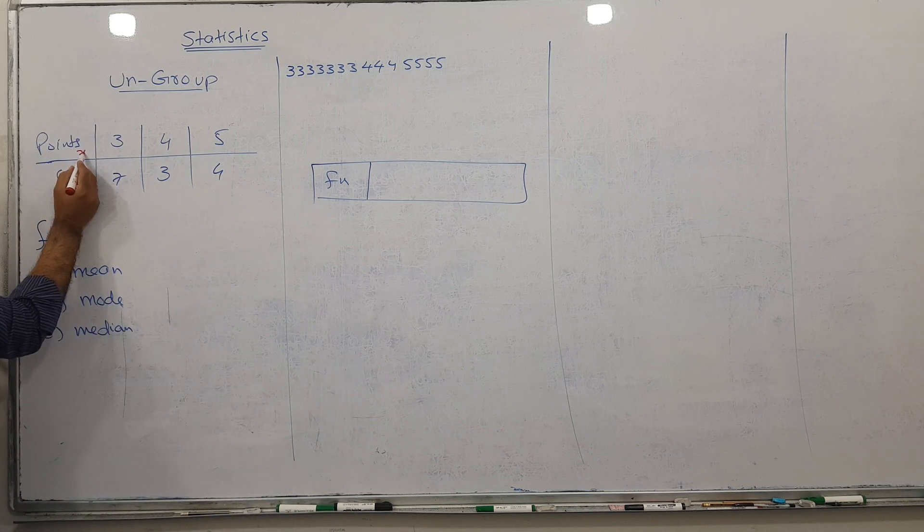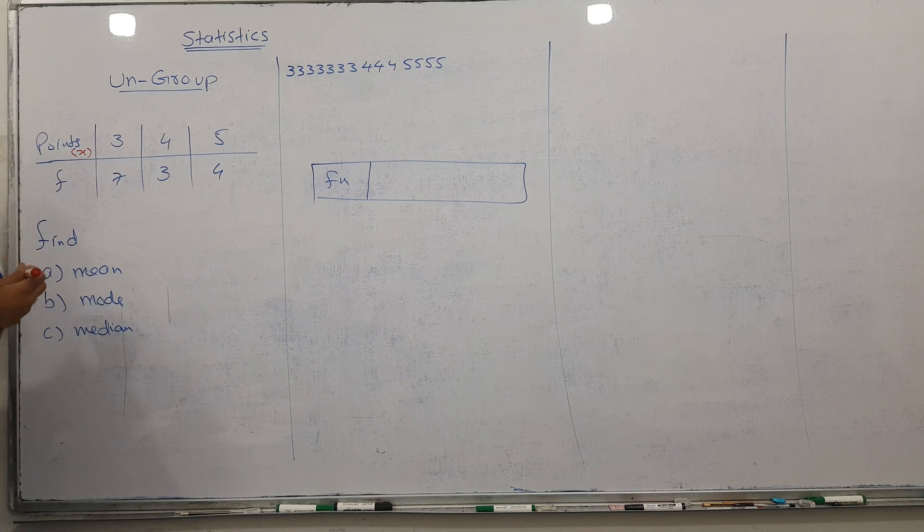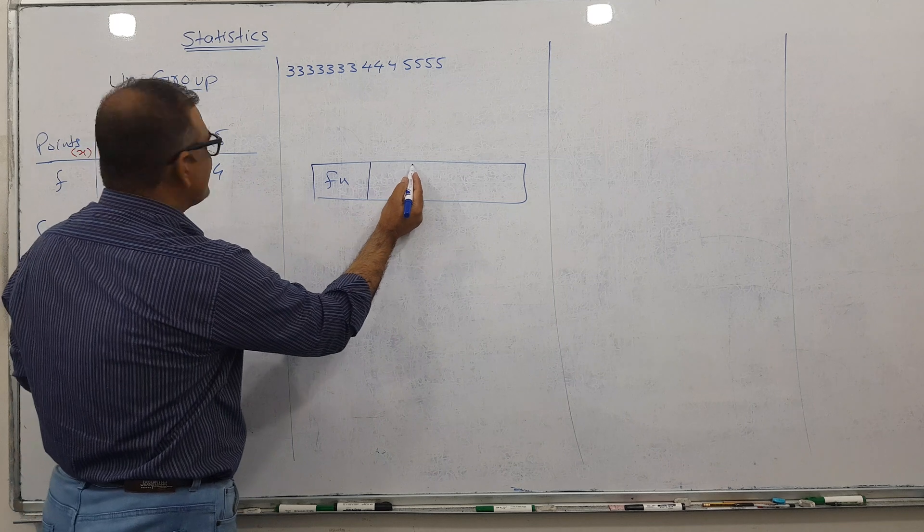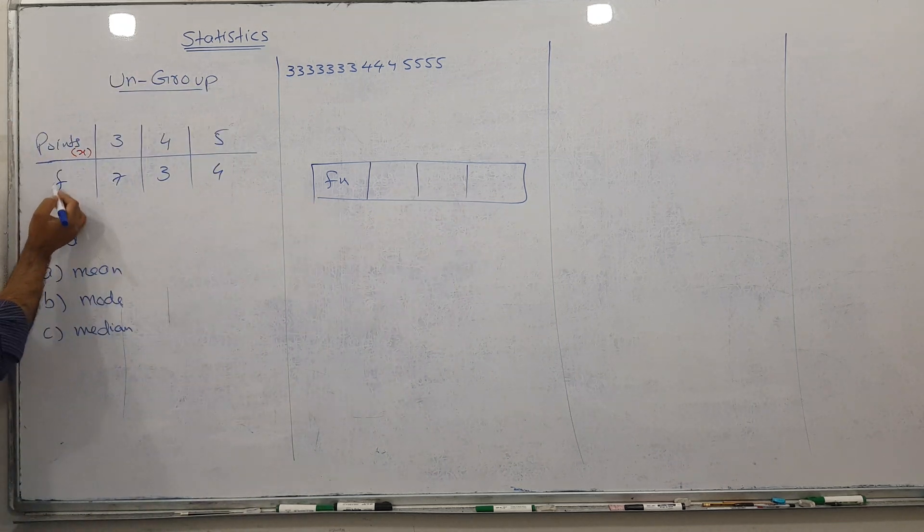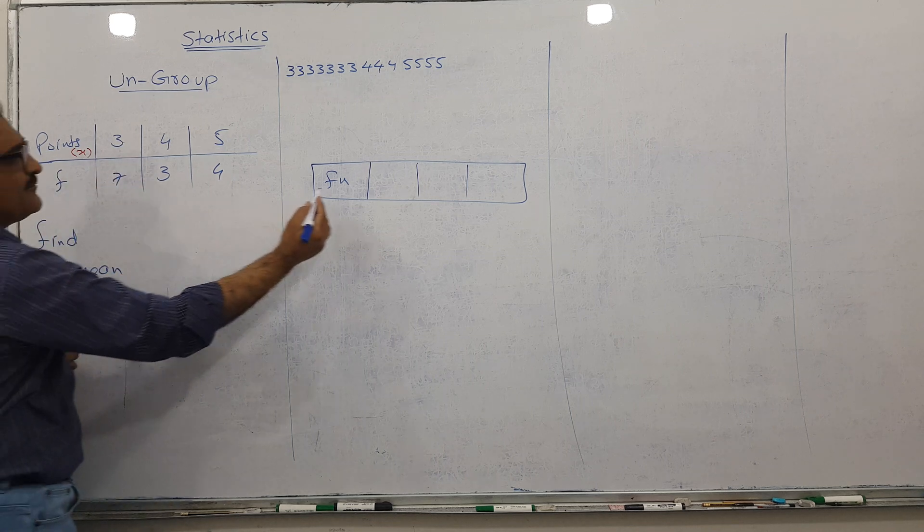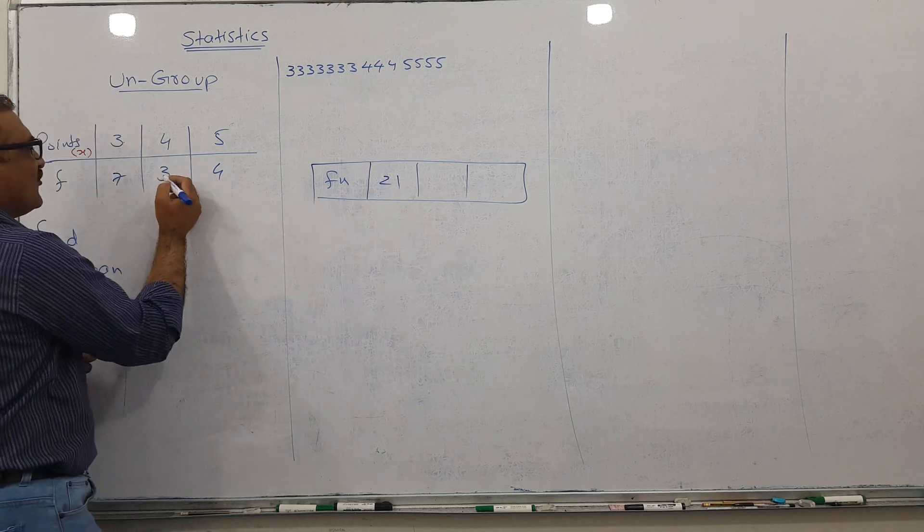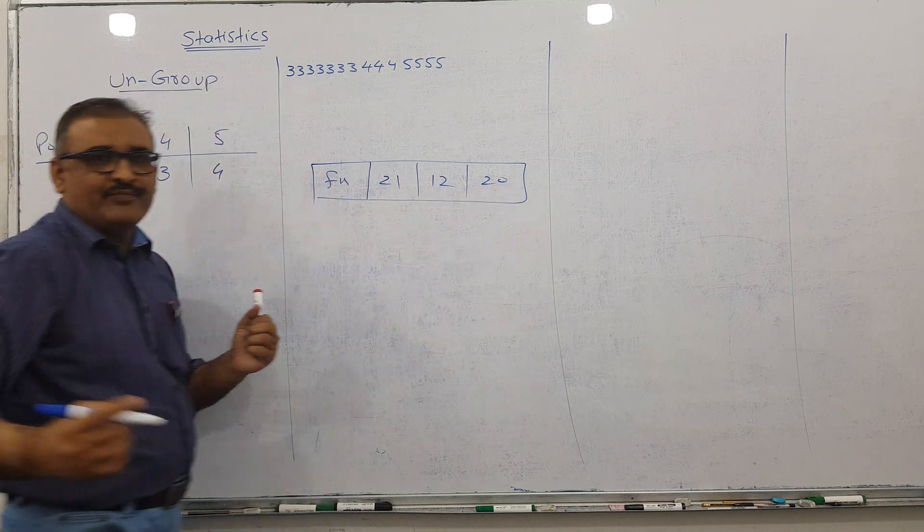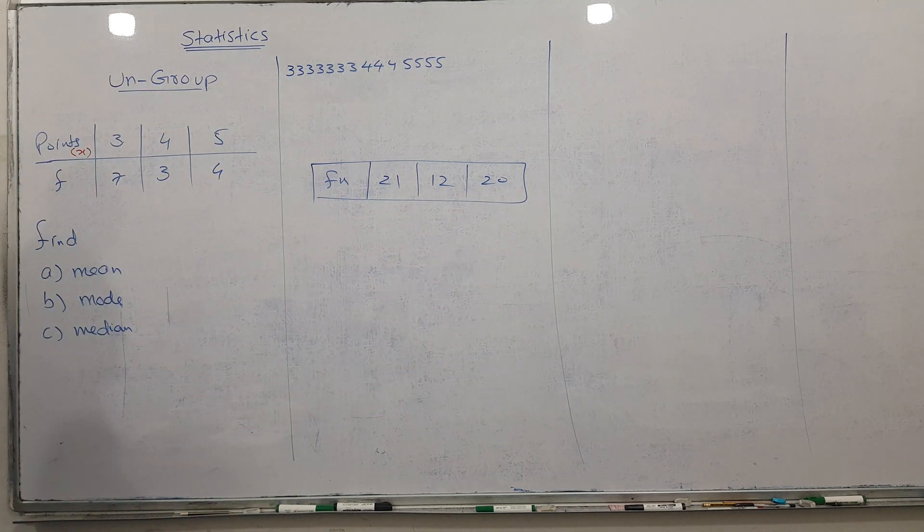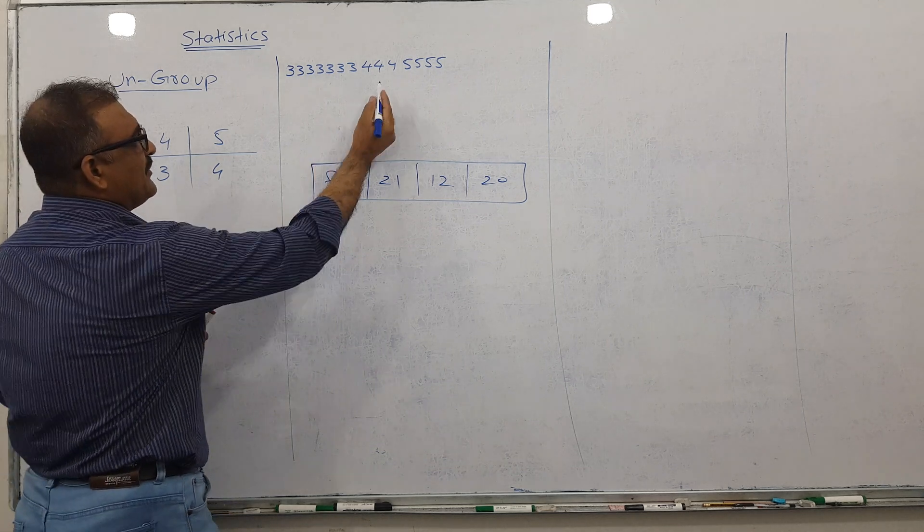We multiply F into X. So three times seven equals 21, four times three equals 12, five times four equals 20. I'm just multiplying, which indirectly means adding.